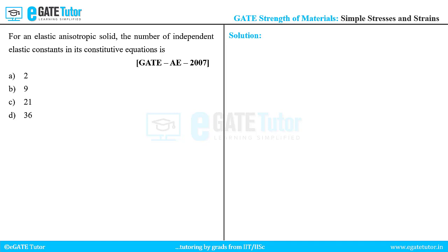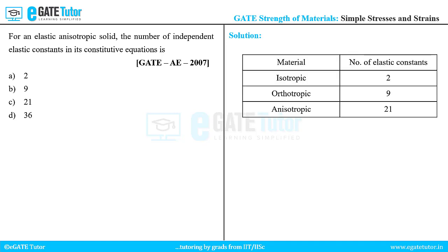In general, it is to be remembered that for an elastic isotropic material, the number of elastic constants required are 2. For an orthotropic material, the number of elastic constants required are 9. And for anisotropic material, the number of elastic constants required are 21.